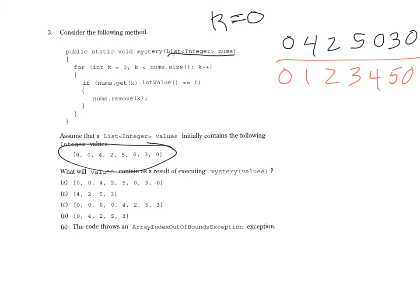K is now equal to one, so we are going to end up actually skipping this first zero because again of the fact that k is going to increment regardless.